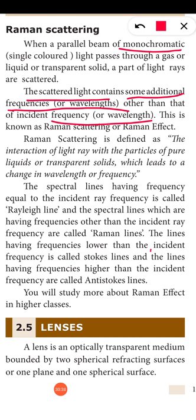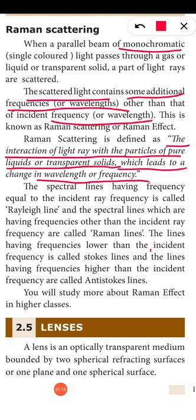Raman scattering is defined as the interaction of a light ray with a particle of pure liquid or transparent solid which leads to a change in wavelength or frequency. So in Raman scattering, the scattered light has frequencies or wavelengths that are different from the incident light — the frequency changes upon scattering.